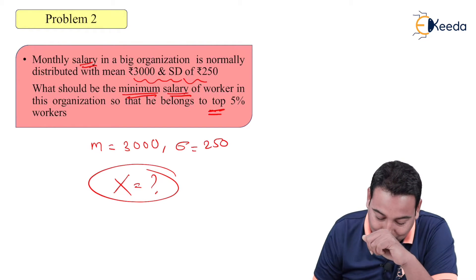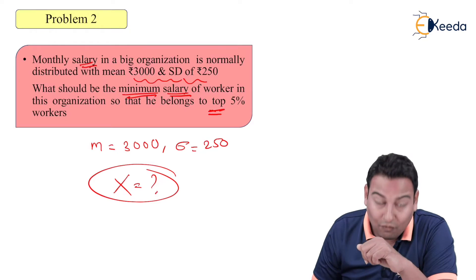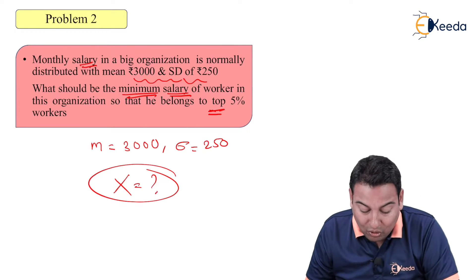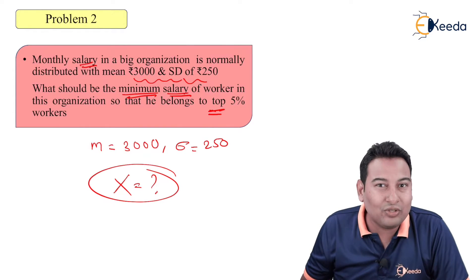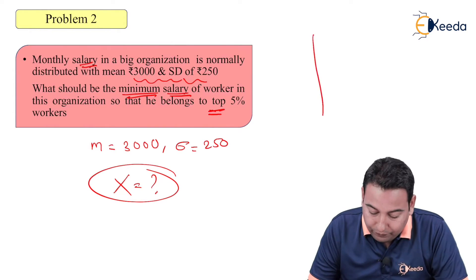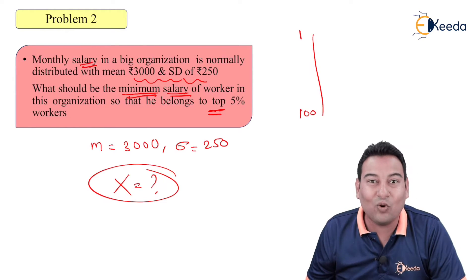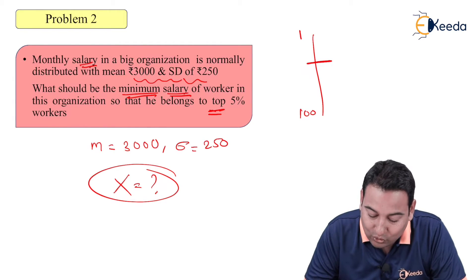So what is asked actually? What is the minimum salary of worker in this organization so that he belongs to top 5% workers? Suppose there are 100 workers from 1 to 100, and it is asking what is the minimum salary so that he belongs to top 5%, that means we are asking about this particular employee's salary.